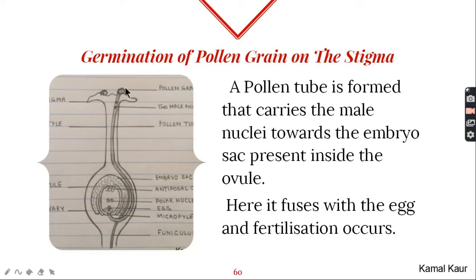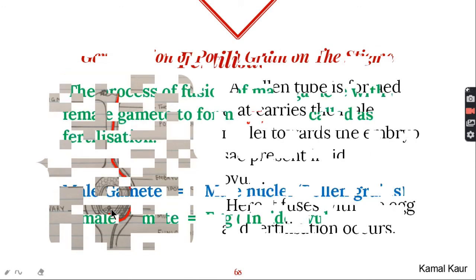As soon as the pollen grains fall on the stigma of a flower, a pollen tube is formed with the help of the vegetative cell of the pollen grain. This pollen tube then pierces through the soft tissue of the style and making its way through it, it moves towards the ovule. On reaching the ovule, it enters it through a minute pore called micropyle and inside the embryo sac of the ovule, an egg is present where fertilization occurs.